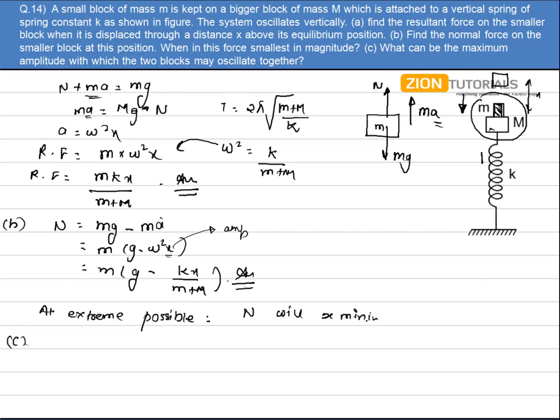In C part what can be the maximum amplitude with which the two blocks can oscillate together. So I have to calculate the maximum amplitude for which they can oscillate together. The critical condition is that when normal is zero at the extreme position. So if it happens then this is my critical condition. I can write mg is equal to ma from this very equation. When normal is equal to zero, mg is equal to ma. Mass gets cancelled.